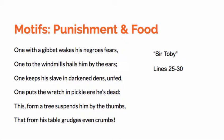When you look at these lines, you see two different sets of language. One is the language of punishment: the gibbet, which is what you're hung from; windmills hailing by the ears; there's physical punishment, kept in darkened dens, suspended by trees from thumbs. So these are the images of physical punishment and torture.